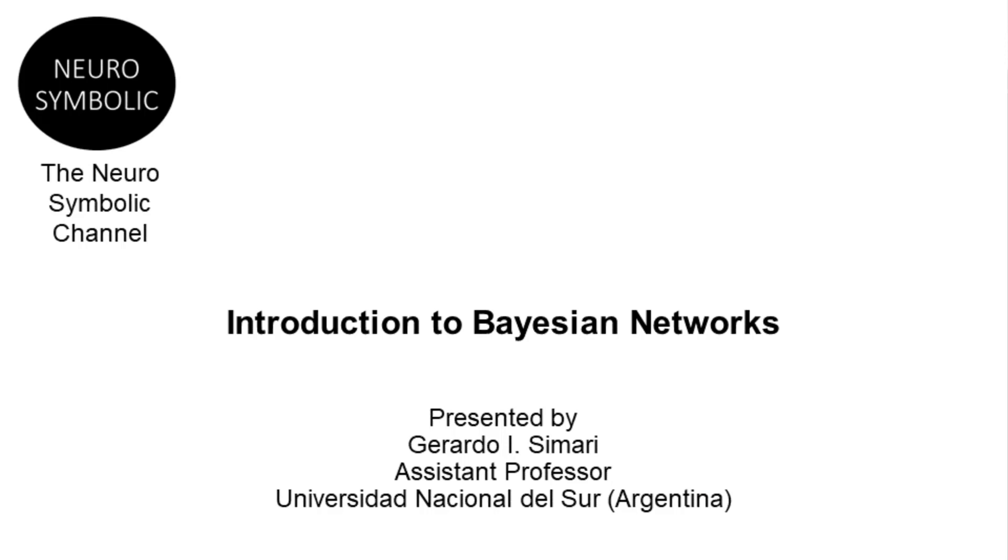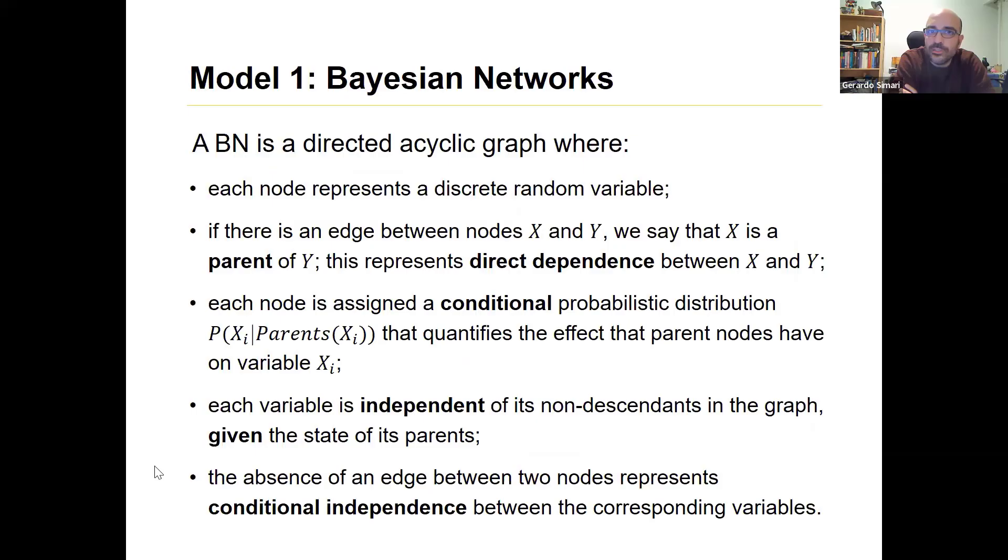So the first model, this is the one that if I had to bet, making a probabilistic joke, I would say that probably most of you have at some point encountered, but I'll do a quick review anyway. So each node in a BN, we'll call them BNs, we have a directed acyclic graph, so no cycles, directed edges.